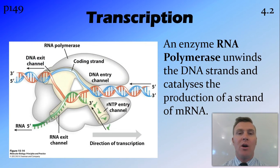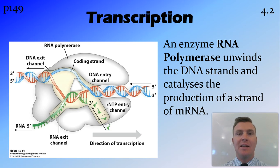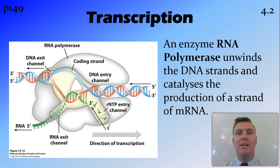So the process of transcription involves an enzyme called RNA polymerase. It unwinds the DNA at the section that is going to be transcribed, and it knows where to unwind because there is what's called a start codon — a little sequence that tells the RNA polymerase where to bind and where to start unwinding the DNA.